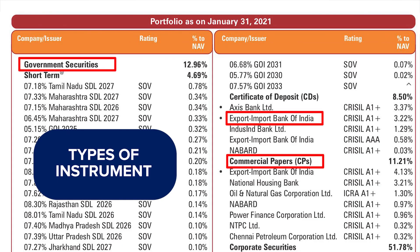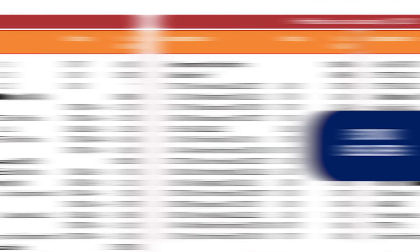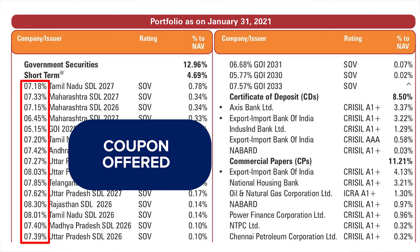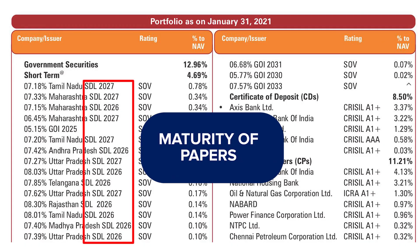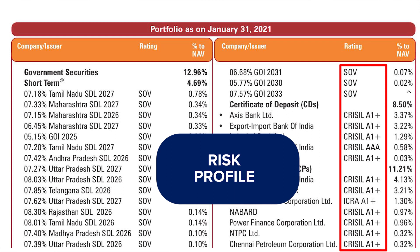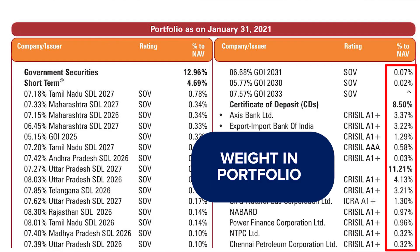The portfolio of a debt mutual fund is available in the fact sheet and offers six different types of information: the types of instruments in which the scheme has invested, the bond issuers, the coupons offered, the maturities of the paper, the risk profile depending on the credit rating of the issuers, and finally the weightage of each instrument in the portfolio.